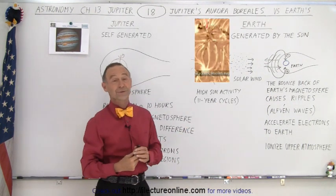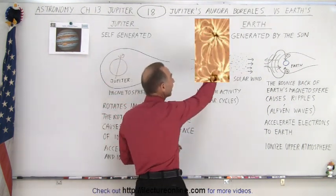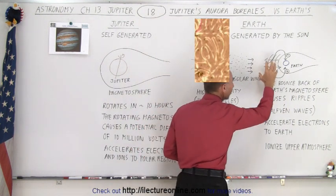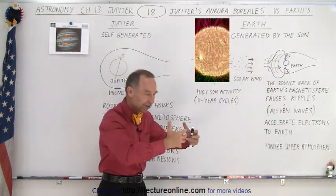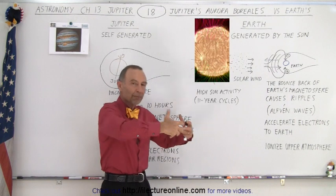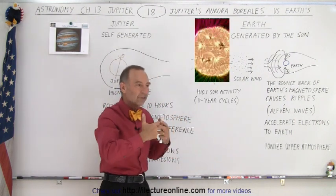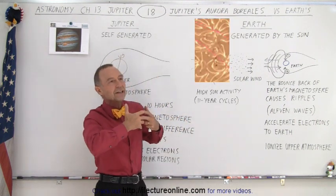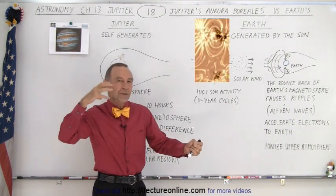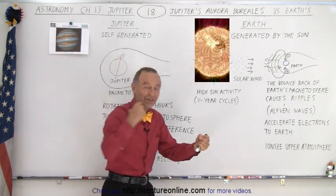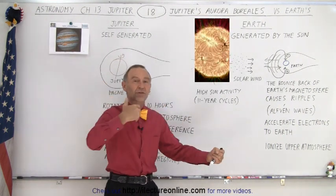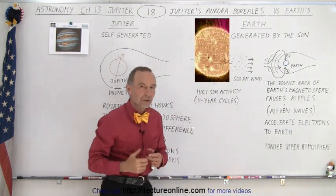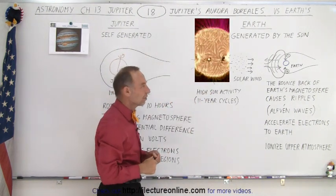Haywire is kind of a scientific term, I suppose. Those variations of magnetic field then affect the Earth's magnetic field, and the Earth's magnetic field feels a pull towards the Sun, so the magnetic field gets stretched out, and then just like a rubber band, when the force diminishes, it snaps back and goes back and forth — especially during the high Sun activity during that 11-year cycle.